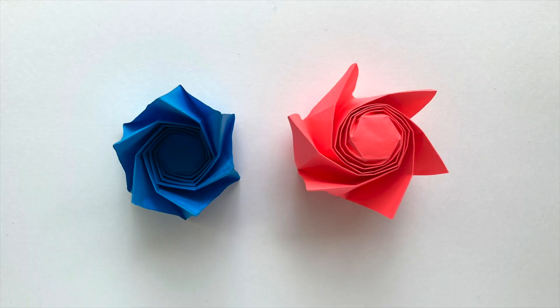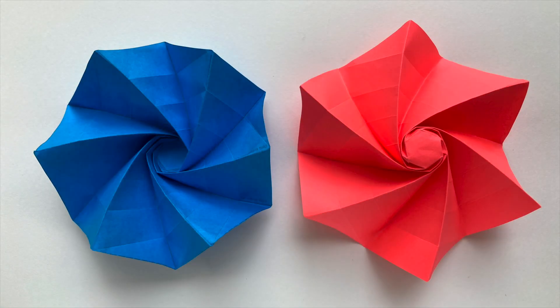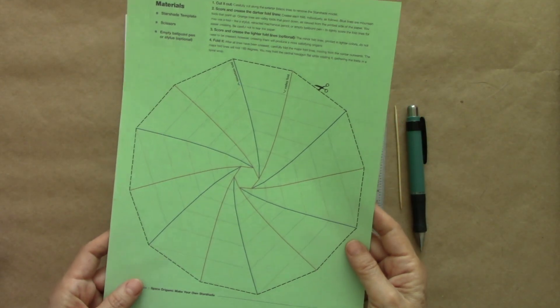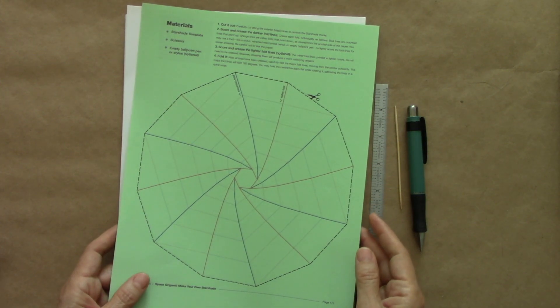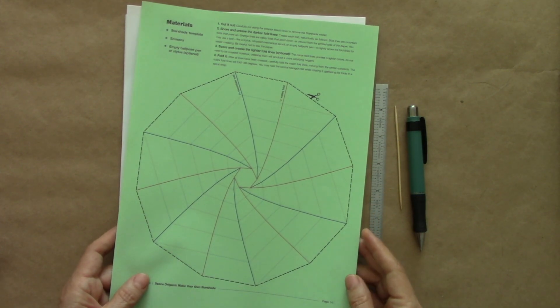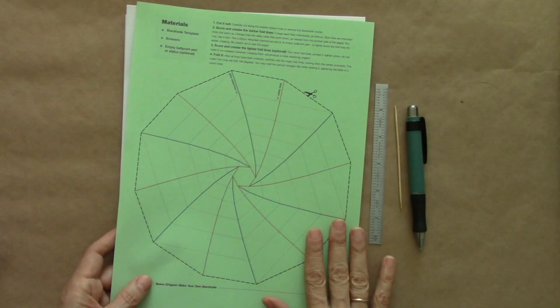So, let's make this star shade. First, we need to print out the crease pattern. Below this video, you can find the link for the NASA website where you can download it.